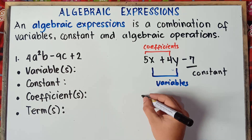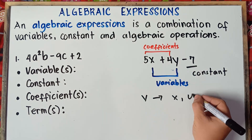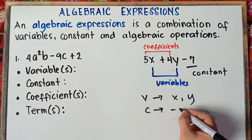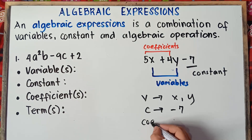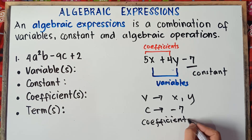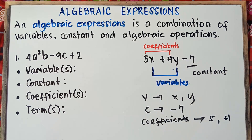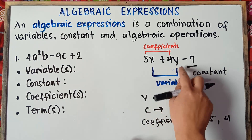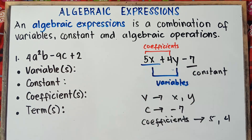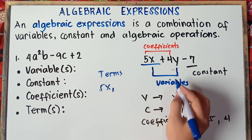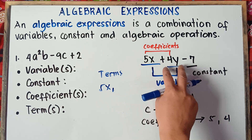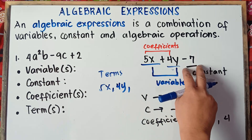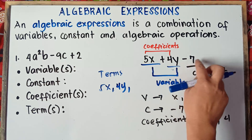Our coefficients are positive 5 and positive 4. For the terms, they are separated by plus and minus signs. So our first term is 5x, second term is 4y, and third term is negative 7 — include the minus sign. That's it — simple as that.